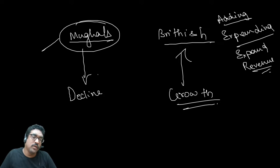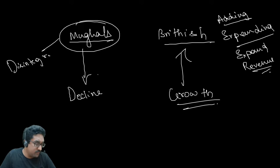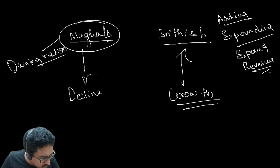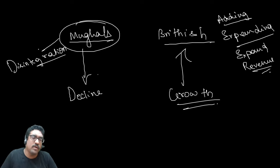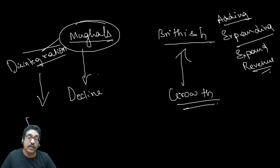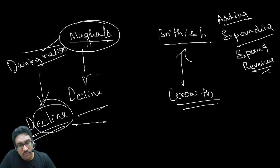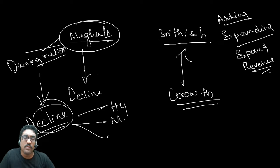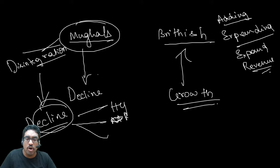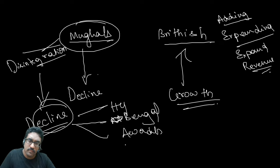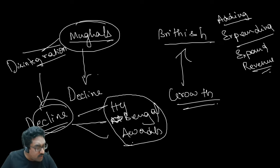Whereas the Mughals were going through disintegration - that is, a decline. How decline? Hyderabad, Murshidabad or what we call Bengal - like this, many states were developing independently as the Mughal empire fragmented.